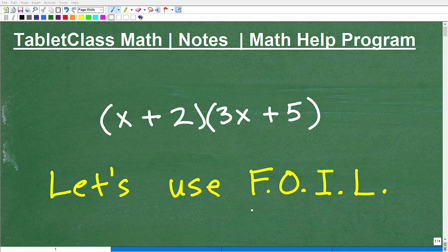Okay, let's go ahead and use the FOIL method to figure this out. And what do we got going on here? Well, we have a binomial, and we're multiplying it by another binomial.